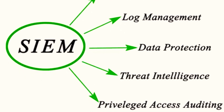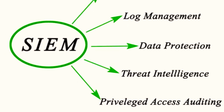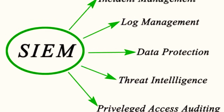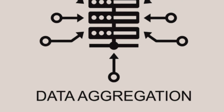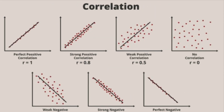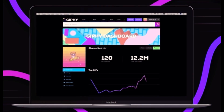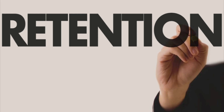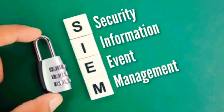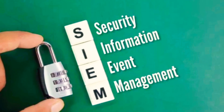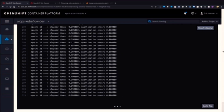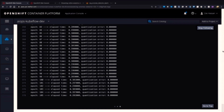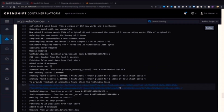In summary, SIEM is a powerful tool that aggregates and analyzes log data from various sources within an organization. Its components — data aggregation, correlation, alerting, dashboards, compliance, and retention — work together to provide a comprehensive view of an organization's security posture. By detecting patterns and anomalies that may indicate a security threat, SIEM plays a critical role in protecting an organization's information assets.